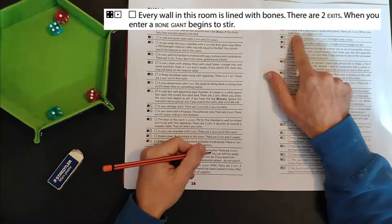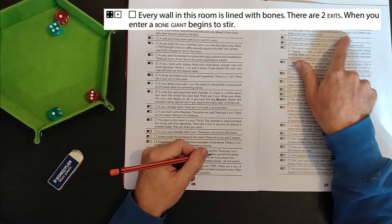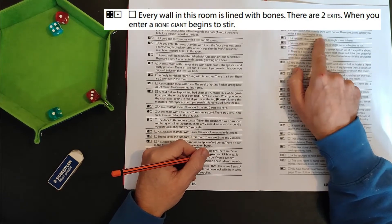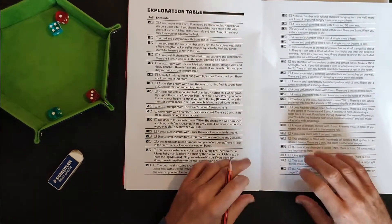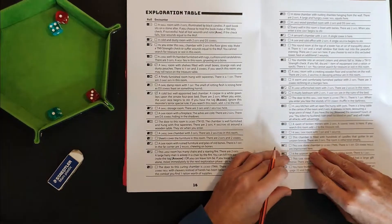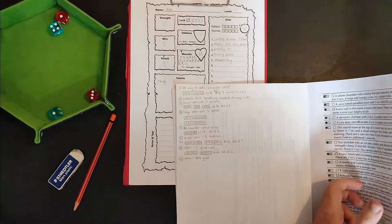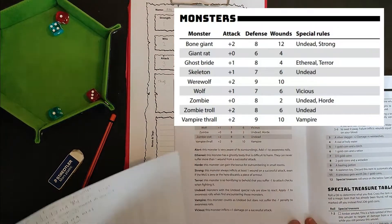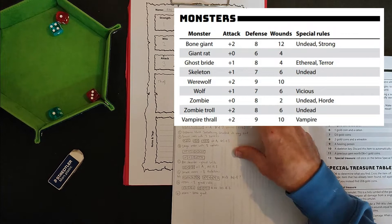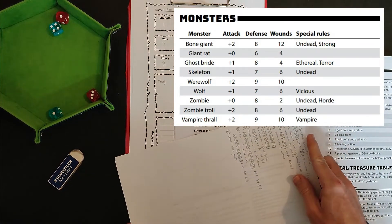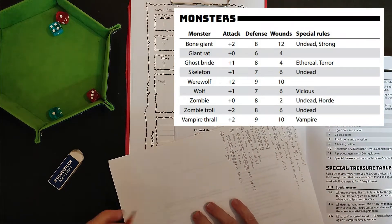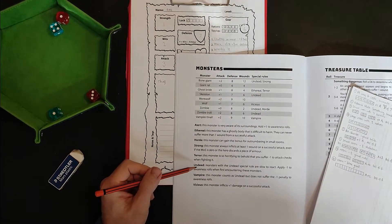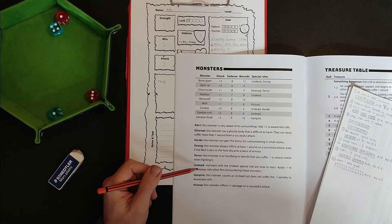Forty one. Every wall in this room is lined with bones. There are two exits. When you enter, a bone giant begins to stir. Yikes. So that sounds like a worse baddie. So let's find out all about the bone giant. Bone giant. Oh, he is a beast. Look at that. He's got the most wounds of any creature. Oh, and he's undead and he's strong and he gets a plus two attack bonus. Jeez. And he's undead and strong. So undead is good for me. That means I roll minus one to awareness. Hopefully I will get an attack in at the start because I'm going to need it. And he's strong.